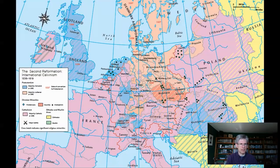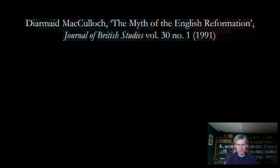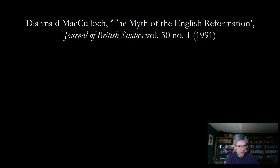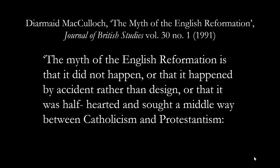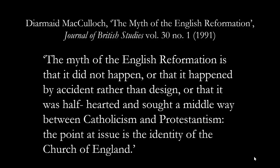In 1991, an up-and-coming English church historian named Dermot McCulloch—who, in the interest of full disclosure, was my own doctoral supervisor a few years afterwards—published an article under the teasing title, The Myth of the English Reformation. The title seems to suggest that the English Reformation was a myth, but the first line makes it plain: the myth of the English Reformation is that it didn't happen, or that it happened by accident rather than design, or that it was half-hearted and sought a middle way between Catholicism and Protestantism. And this myth isn't an abstract historical proposition, but a claim about the identity and nature of the institution that we call the Church of England.